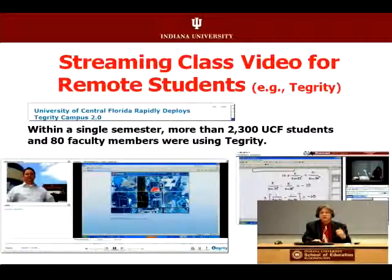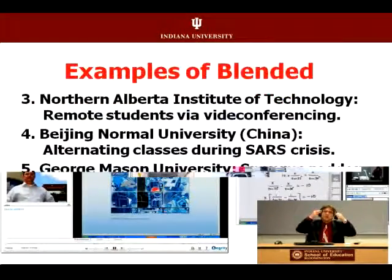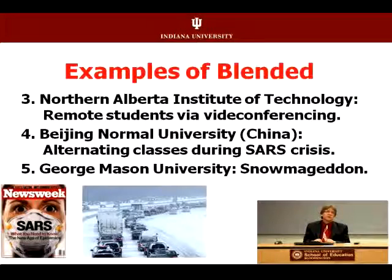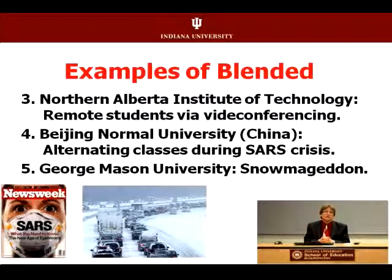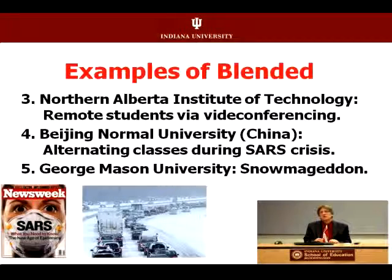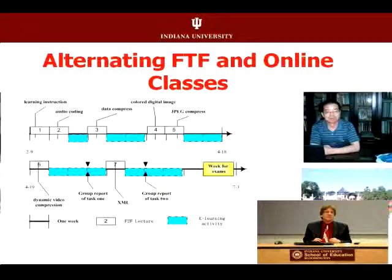They might see the instructor and attend through a virtual format. In other places, you might have video conferencing. Northern Alberta Institute of Technology uses video conferencing to send things off to remote sites of Alberta, where students might not be able to drive down to Edmonton for a class. Beijing Normal University decided to use blended learning and fully online learning when SARS hit. George Mason University in the winter of 2010 — that terrible winter, Snowmageddon — became open to online and blended learning. The SARS epidemic hit China in a big way, and they started alternating their face-to-face and online classes.